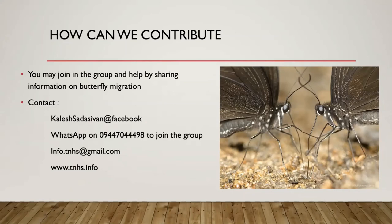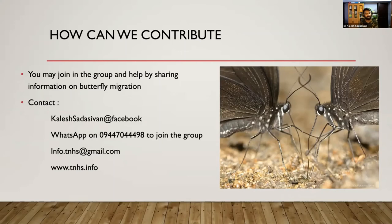Question: Does each generation complete one round journey or just one way? Do they breed in between? There are two phenomena happening in South India. One is that one generation travels from Western Ghats to Eastern Ghats, breeds, and dies — the subsequent generation comes back. So it is a two-generation migration. The interesting case of the crimson rose is that we have not seen a return migration from Sri Lanka, suggesting it may be a one-way dispersal. In the case of the painted lady, it is reportedly a multiple-generation migration on the return.